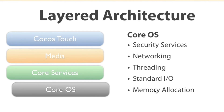The last layer is Core OS. It operates at a very low level and provides low-level operating system tasks. For example, security services, networking, threading, standard I/O, iOS input/output, memory allocation, and everything at that level.